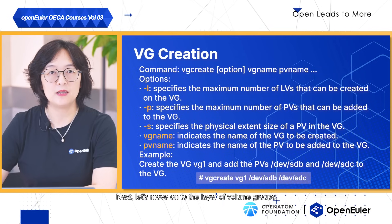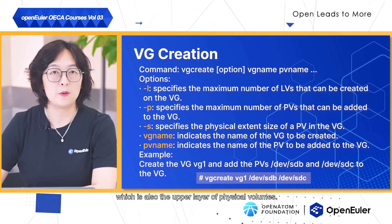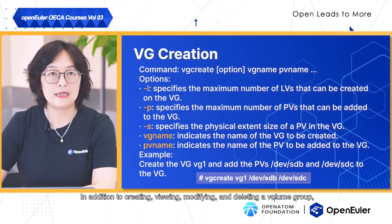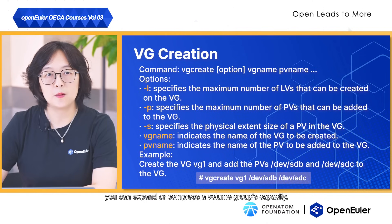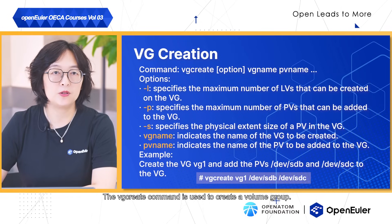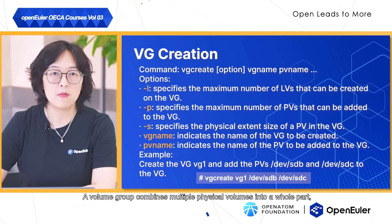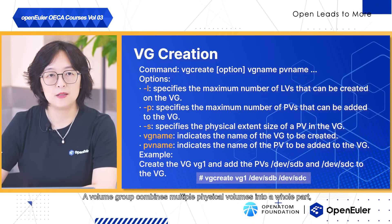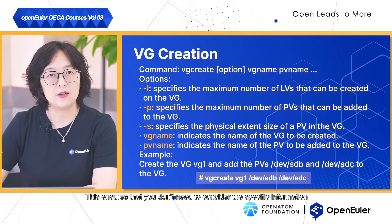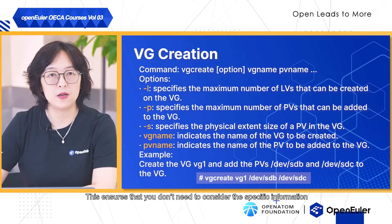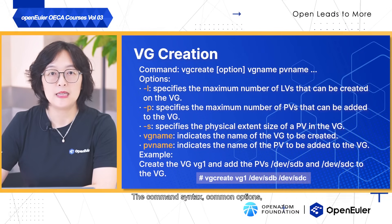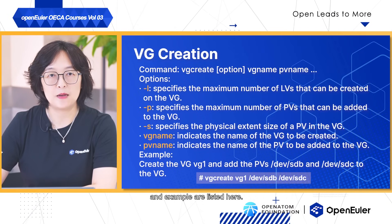Next, let's move on to the layer of volume groups, which is also the upper layer of physical volumes. In addition to creating, viewing, modifying and deleting a volume group, you can expand or compress a volume group's capacity. The vgcreate command is used to create a volume group. A volume group combines multiple physical volumes into a whole, hiding the details of the underlying physical volumes. This ensures that you don't need to consider the specific information of physical volumes when creating a logical volume on the volume group. The command syntax, command options and example are listed here.